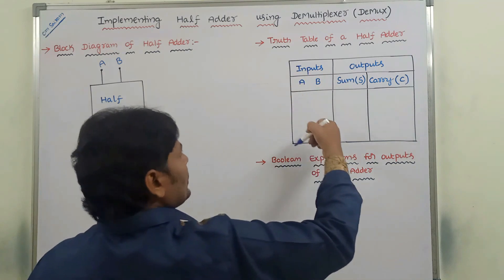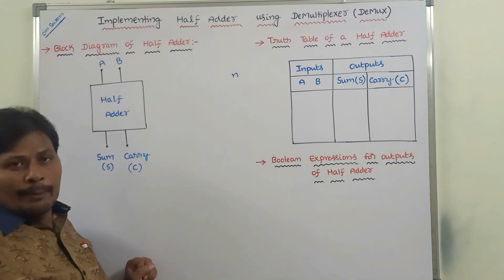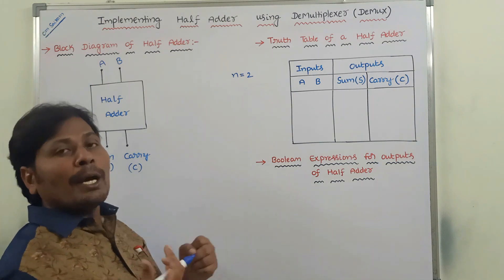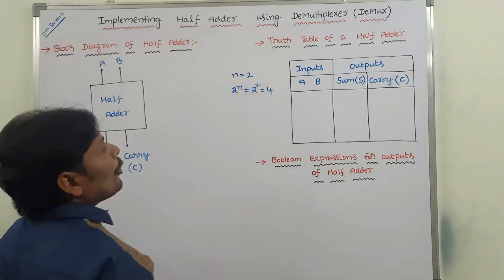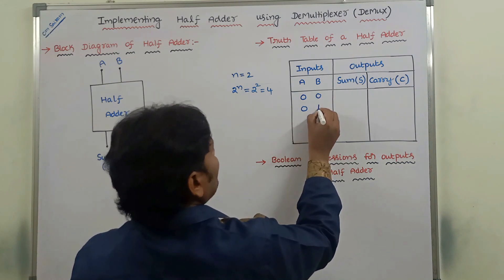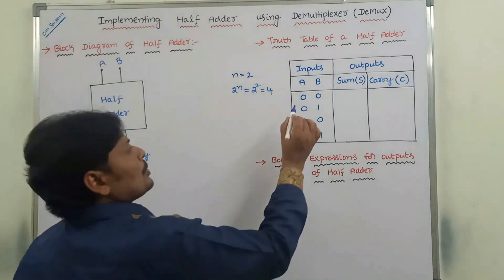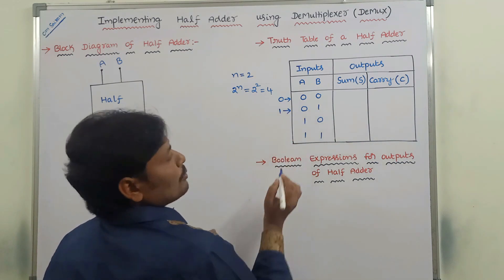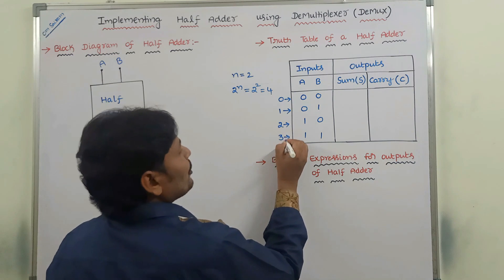Now in this truth table, these are the inputs and these are the outputs. N is the number of inputs — there are two inputs. With two inputs, how many input combinations do we get? That is 2 power N, which is 2 power 2, equal to 4 input combinations: 00, 01, 10, and 11. Their equivalent decimal values are 0, 1, 2, and 3.